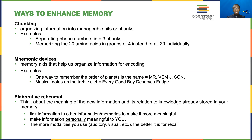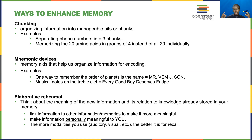Some more advanced memory strategies include elaborative rehearsal — thinking about the meaning of new information and its relation to knowledge already stored in memory. A useful strategy is to tie new information to other information that is already easy to remember. For example, if you're trying to memorize the 50 states and you've traveled to all of them, instead of remembering them alphabetically, you could picture yourself in each state — the monuments, the feelings, the sounds. That uses more modalities, combining visual and auditory processing to make the memory more vivid.